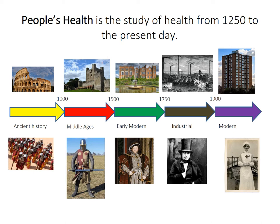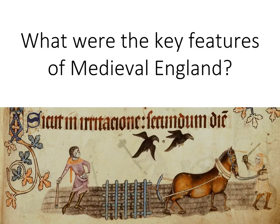So people's health looks at four main periods of time: the Middle Ages, the early modern period, the industrial period, and the modern period. Let's start with the Middle Ages. In this video, I'd like to look at what the key features of medieval England were — this is going to be an overview of medieval England.